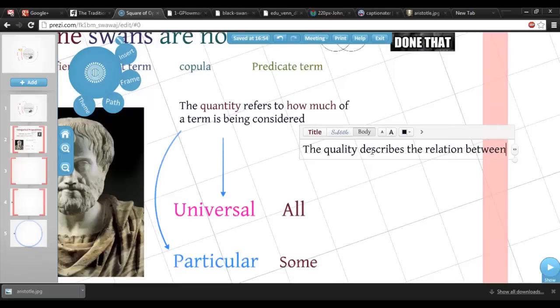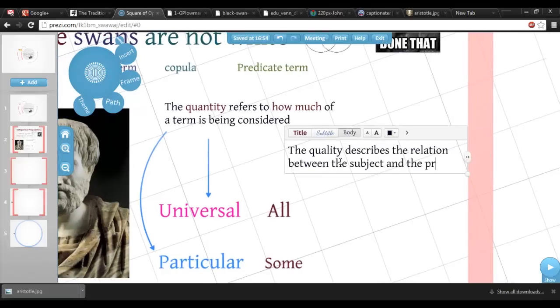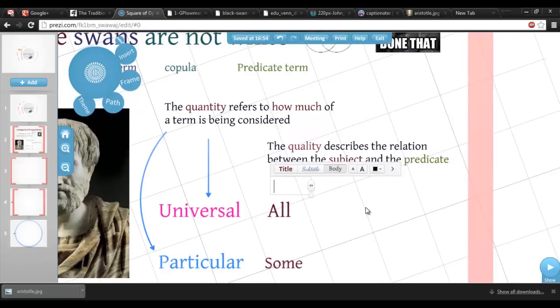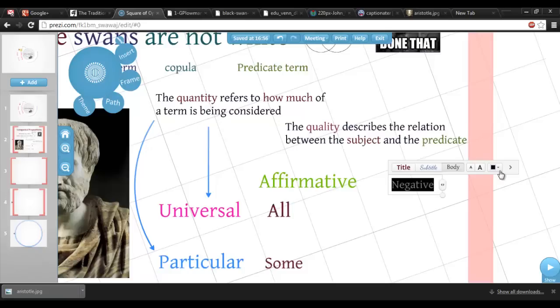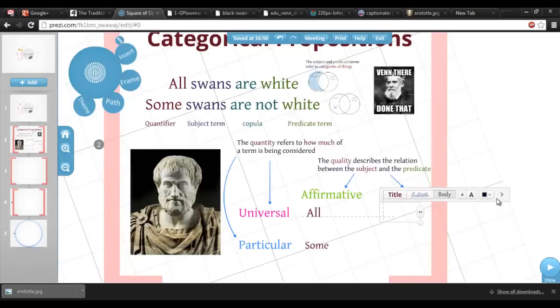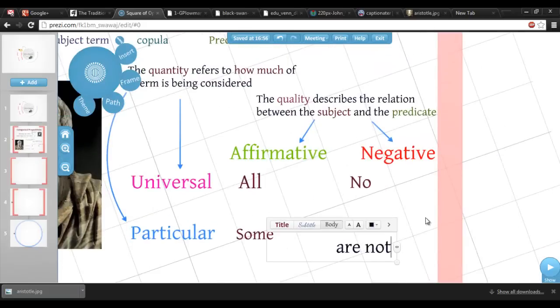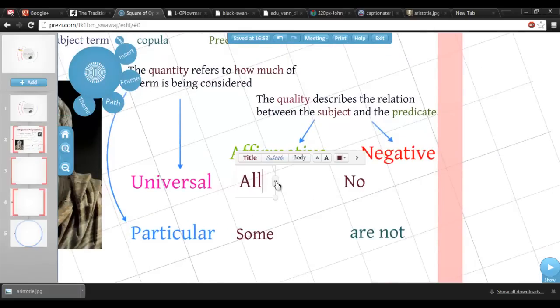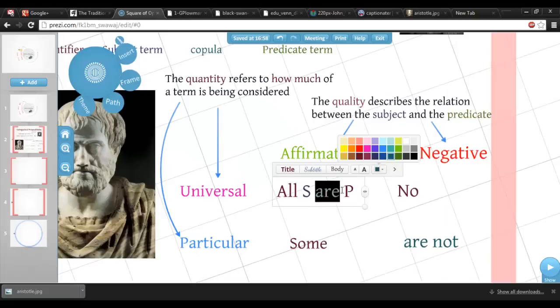The other formal attribute is called the quality, and it describes the relation between the subject and the predicate. An affirmative quality indicates that the subject is a member of the predicate category, and a negative quality indicates that the subject is not a member. Negative qualities are indicated with the quantifier no, or the copula are not.